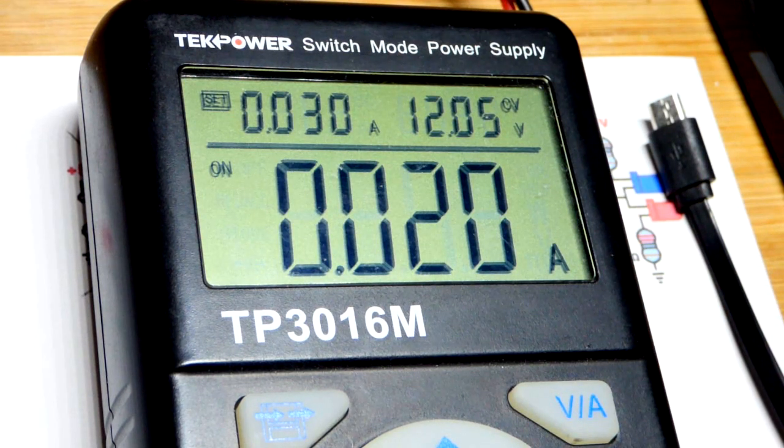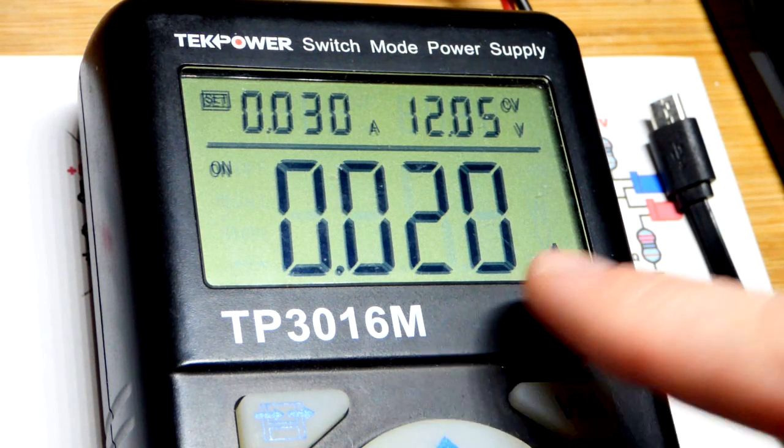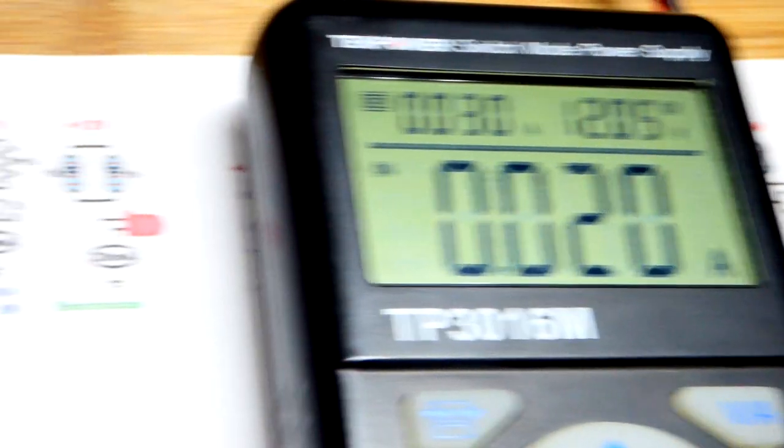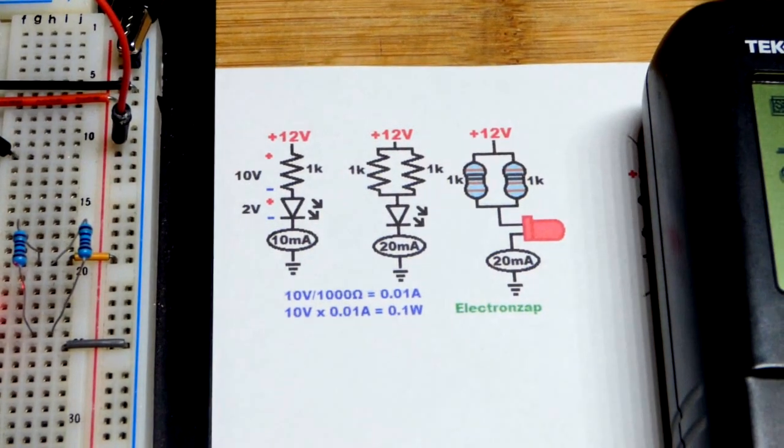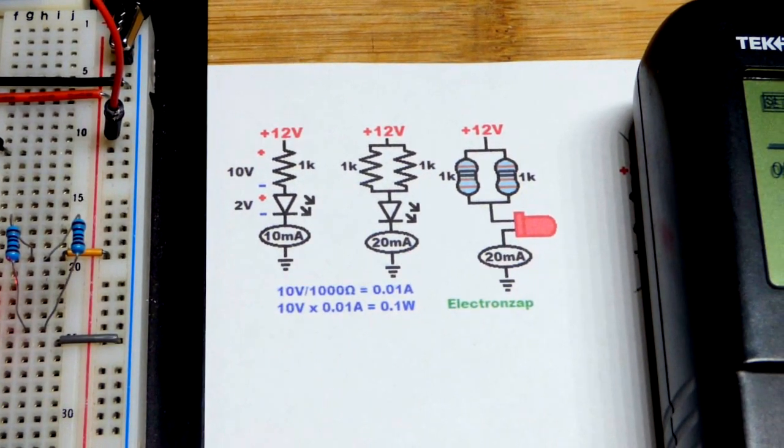Now you can see that we set our constant current up to 30. We can output 30 milliamps, and we are not exceeding 20 right there. We are at 20 milliamps. So in any case, that's it for this circuit. Hope you enjoyed.